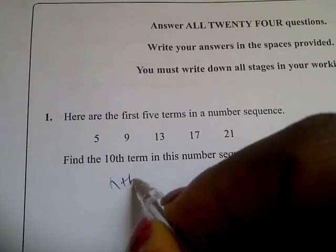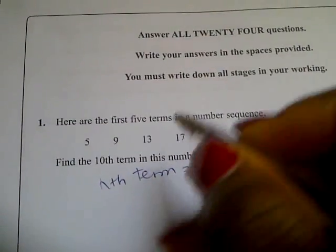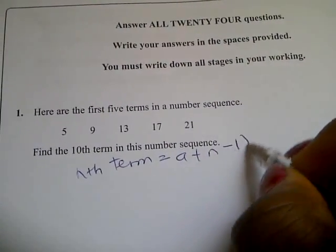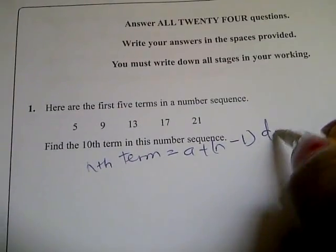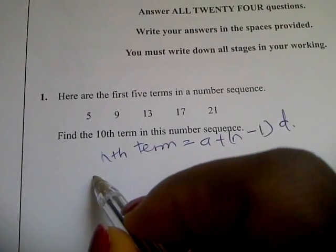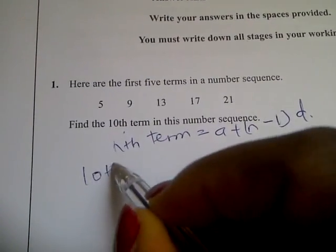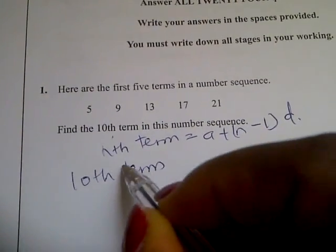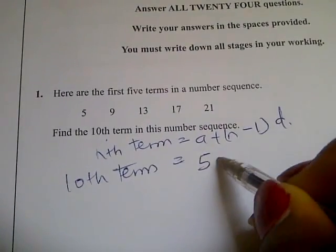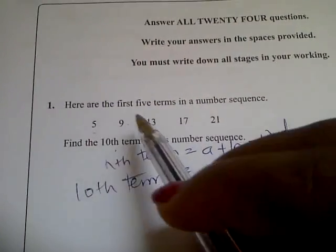We know that the nth term is a plus (n minus 1) times d. So your a is 5. For the 10th term, we have a equals 5, plus (n minus 1), and d is 4.